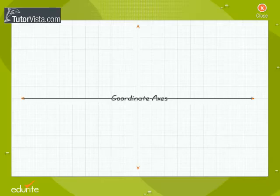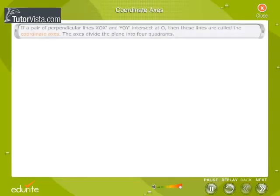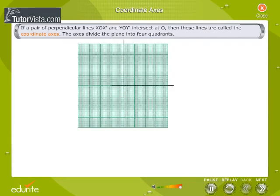Coordinate Axes. If a pair of perpendicular lines XOX' and YOY' intersect at O, then these lines are called the coordinate axes.